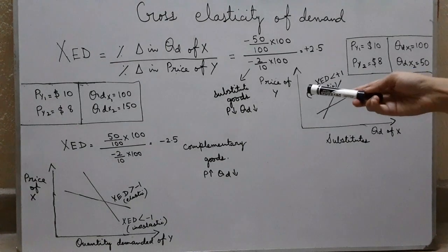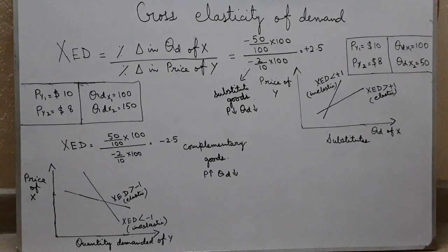As far as substitute goods are concerned, these are the goods that replace each other. For instance, Pepsi and Coca-Cola are a very common example of close substitutes.